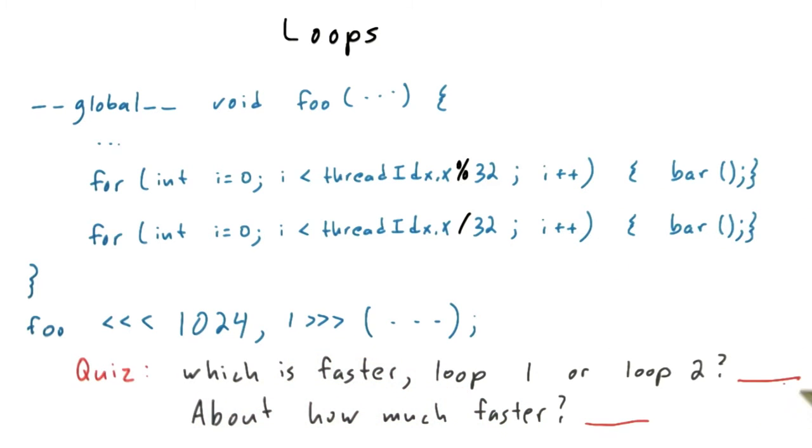So as a quiz, see if you can figure out which of these is faster, loop 1 or loop 2. In other words, where do we spend total across the whole kernel more of our time? And remember, we're assuming that bar is a really expensive function that'll dominate the overhead of actually calling the loop. And roughly how much faster is it? So give me just an integer answer.